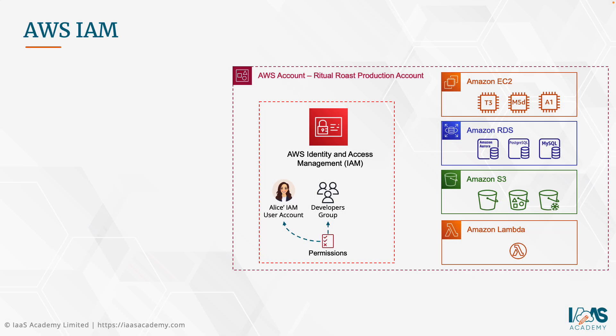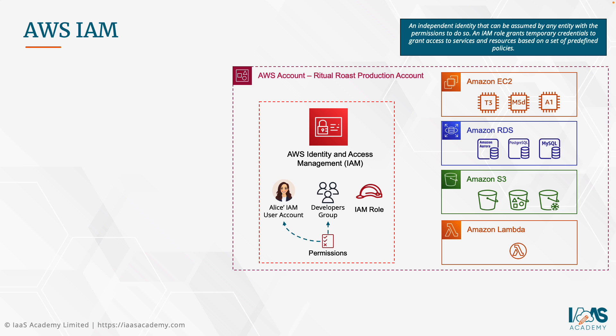Another feature AWS IAM offers is the ability to create IAM roles. An IAM role is an independent identity that can be assumed by any entity with the permissions to do so. It grants temporary credentials to that entity based on a set of predefined policies. An IAM role is similar to an IAM user, except it doesn't belong to one specific user identity — it's an independent identity that can be assumed by other entities, which can then perform actions based on the permissions assigned to the role.